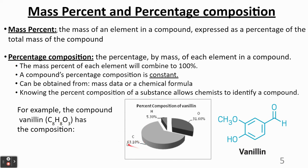But if I were to focus on just one, then we call that the mass percent. So mass percent of carbon in vanillin is 63.10%.